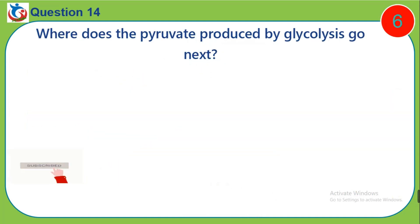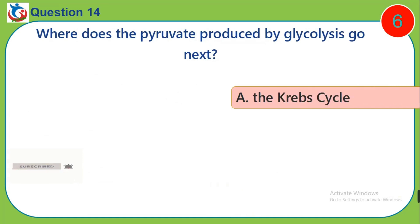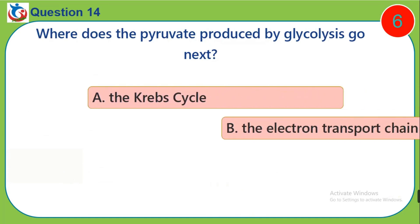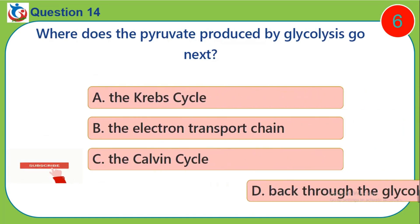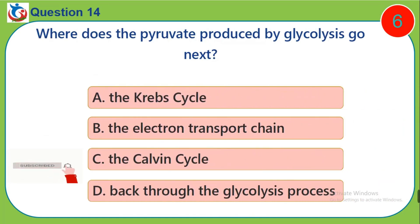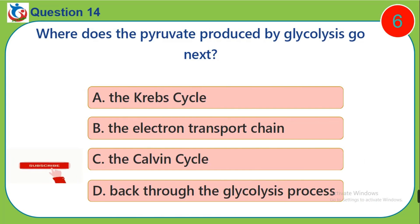Question 14. Where does the pyruvate produced by glycolysis go next? A, the Krebs cycle. B, the electron transport chain. C, the Calvin cycle. D, back through the glycolysis process.